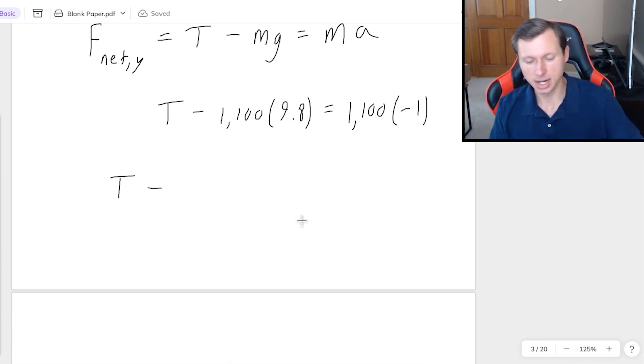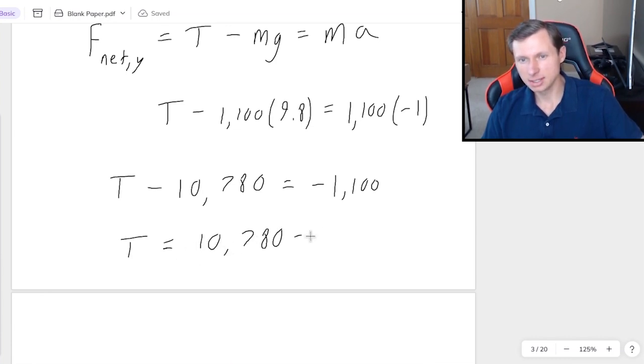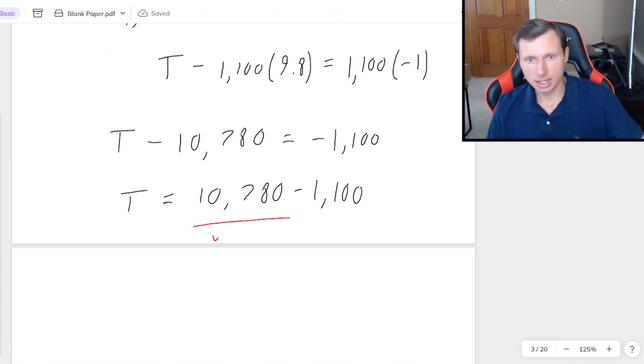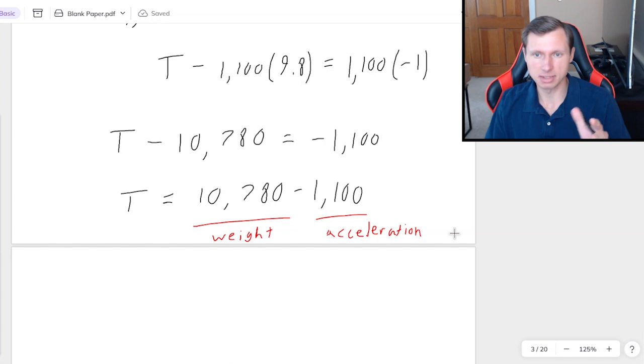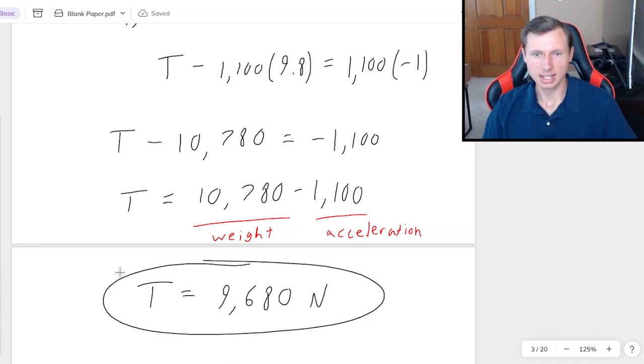And then now the only thing to do is plug in and solve again. So 1,100 times 9.8 is 10,780. And on this side, we have negative 1,100. So I just need to add 10,780 to both sides. And just to quickly explain what these numbers mean, this number is the weight of all the passengers and the elevator, while the 1,100 is the effect of the acceleration. In other words, the people and the elevator are going to feel slightly lighter than normal because it's minus 1,100. And we'll get a final answer of 9,680 Newtons. And there we go.